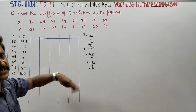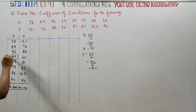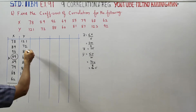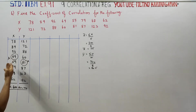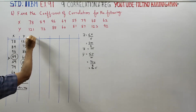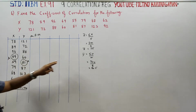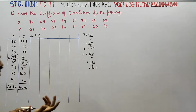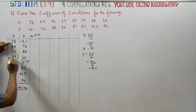We are using the actual means method, also known as the assumed means method. The assumed mean for X is taken as 75. We will start with DX — the deviation in X — which is capital X minus the assumed mean. For example, if a value is 79, then 79 minus the assumed mean; if minus 10, you will be getting values like 9.